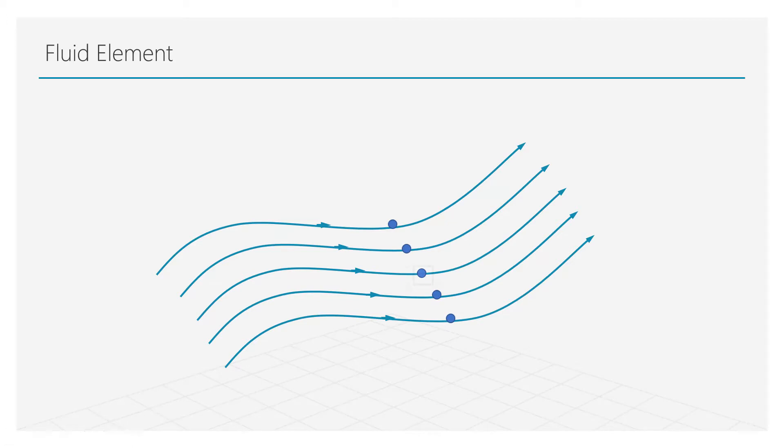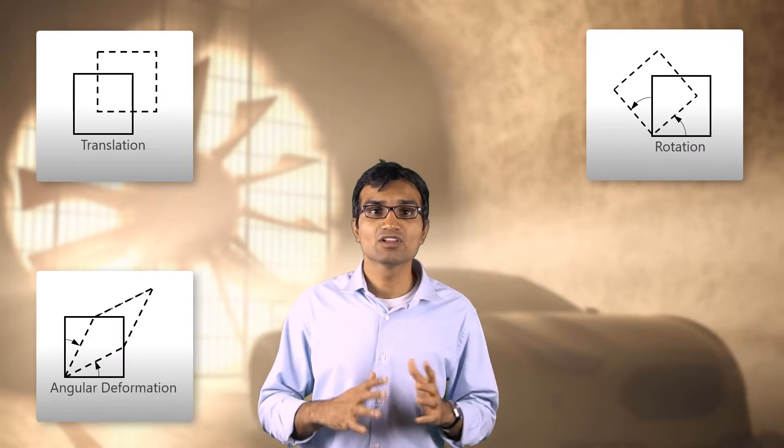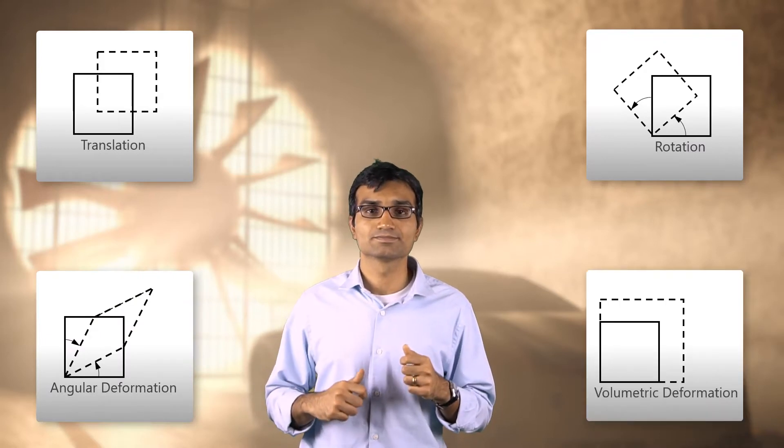We visualize each fluid particle as a fluid element in the flow field. One or more things can happen to this fluid element. This element can undergo translation or rotation or angular deformation or volumetric deformation. In this lesson, we will discuss each of these components in detail.